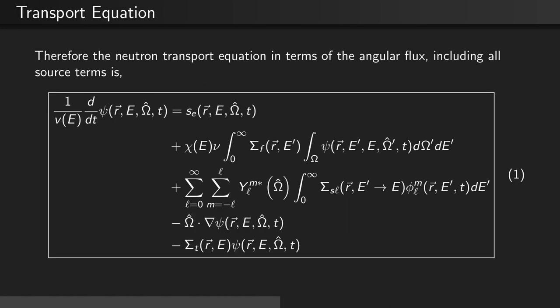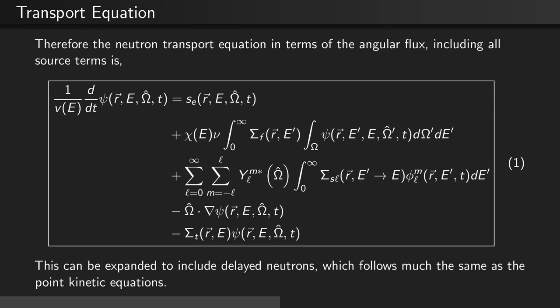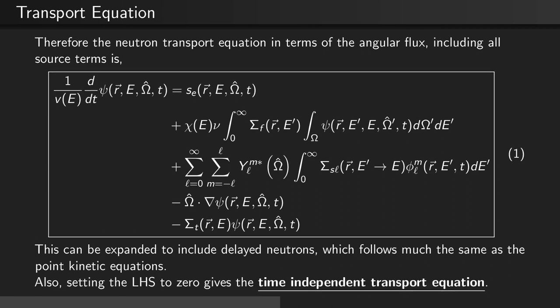Therefore the neutron transport equation in terms of the angular flux, including all the source terms we've described, is this expression seen here, where every term we've discussed in detail. This version can be expanded to include delayed neutrons, which follows pretty much the same derivation as the point kinetic equations with delayed neutron groups. However, we won't be doing that here. Additionally, we can set the left hand side to zero to obtain the time independent transport equation.